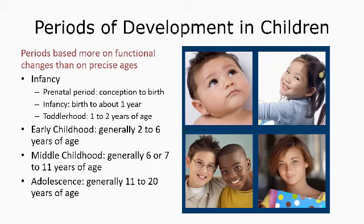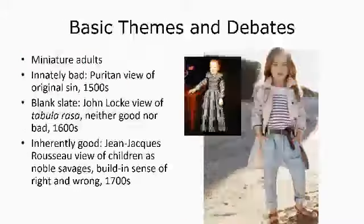Middle childhood ends at around age 11, which is why middle school starts with 11 to 12 and goes to about 14 — that period is called early adolescence, when a lot of the physical changes of puberty happen. These age periods really correspond to what a child is able to know and do, the patterns of what children typically do at those ages.